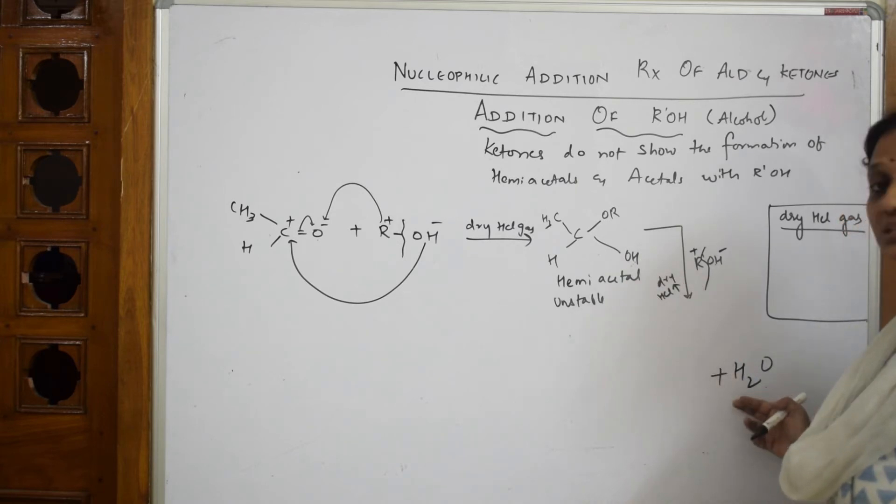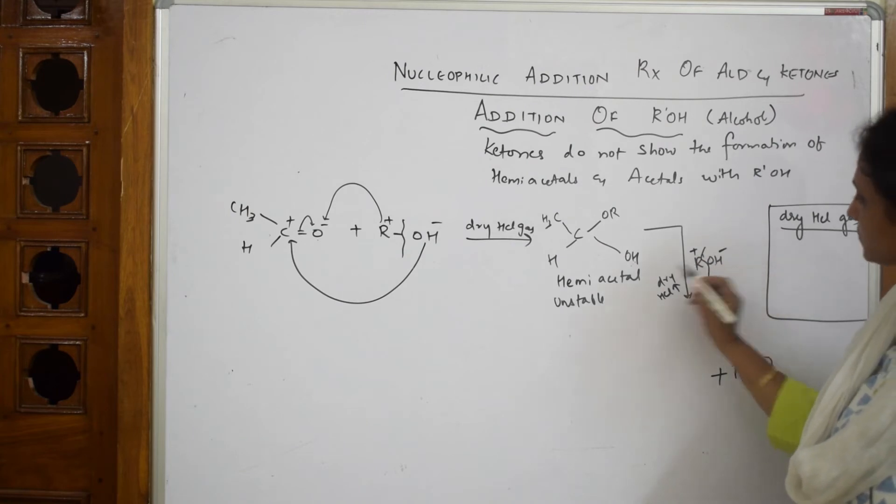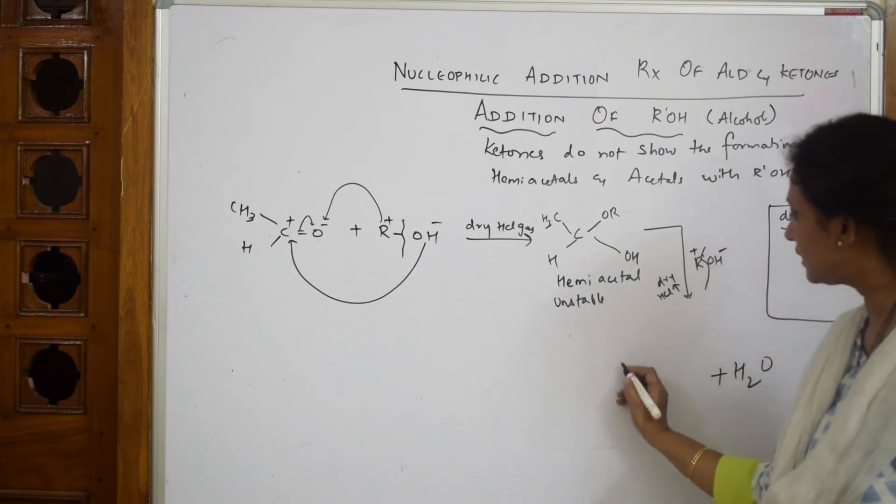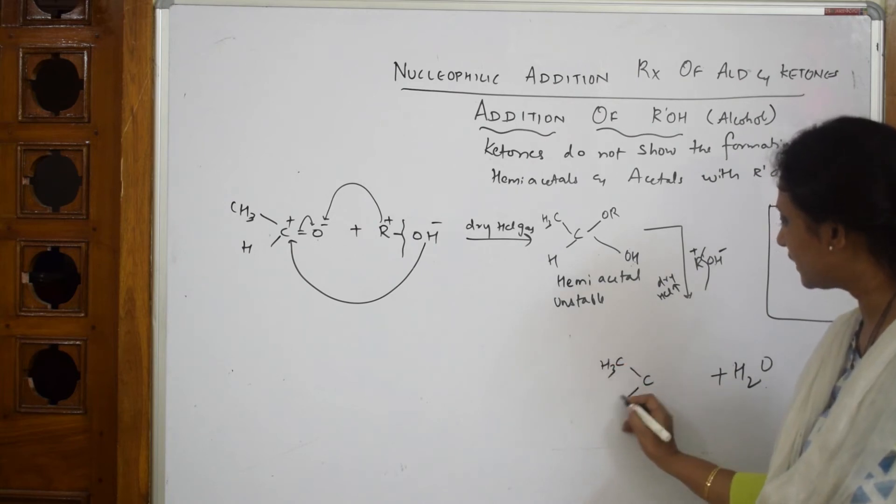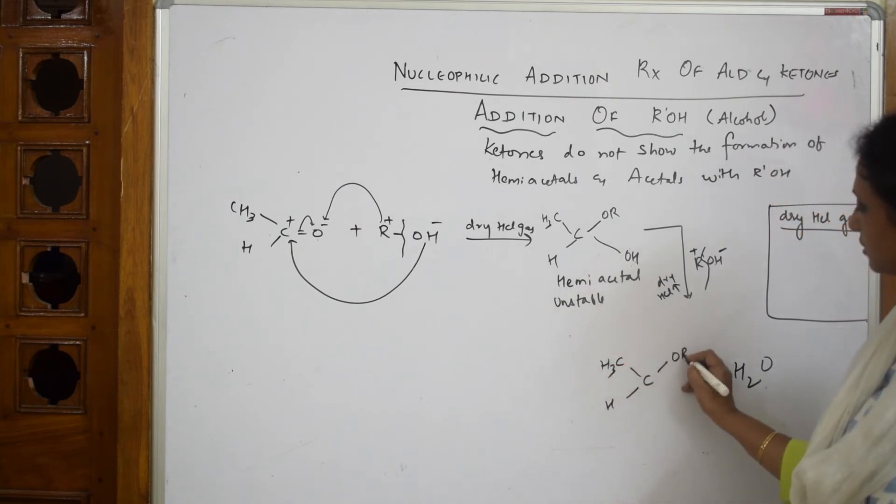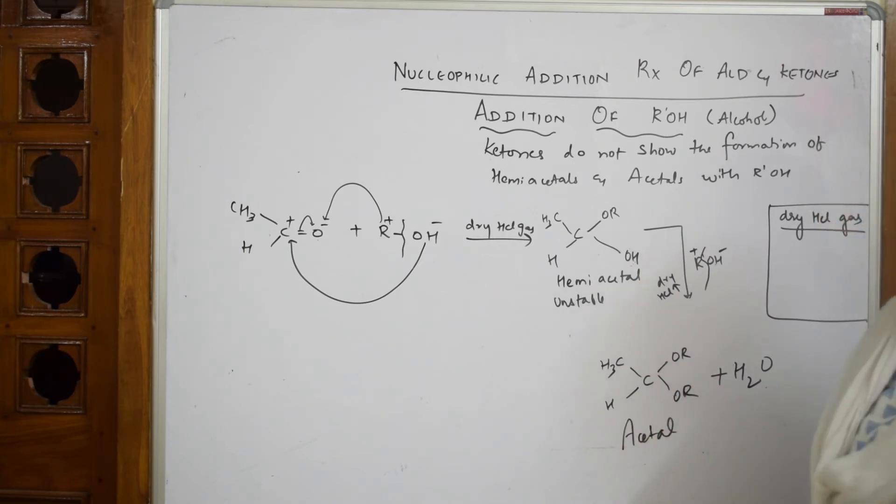Loss of water is very important in this particular reaction. Students don't show this in the exam paper. It's very important, loss of water. When water is lost, this becomes minus. Then R goes and attacks. What do you get? You get CH3, your H, your OR and your OR. Now this is called acetal. Very important, acetal.